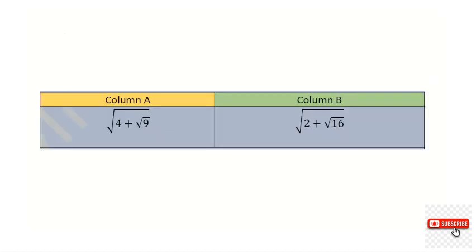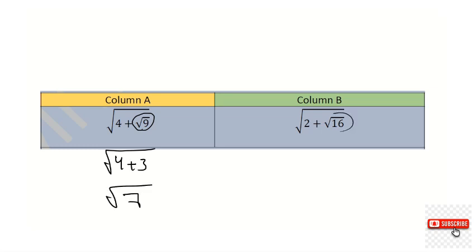Regarding question number 23: I know that root of 9 is 3, so 4 plus 3 gives root of 7 on one side. Root of 16 is 4, so 2 plus 4 gives root of 6 on the other side. Of course, root of 7 is greater than root of 6.